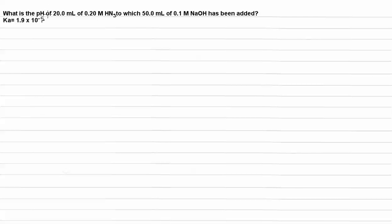Let's first determine the number of moles of our weak acid HN3. We have 20 mL, and there's 1,000 mL in a liter. For every 1,000 mL, we have 0.2 moles of that weak acid HN3. That means our total number of moles is 0.004.